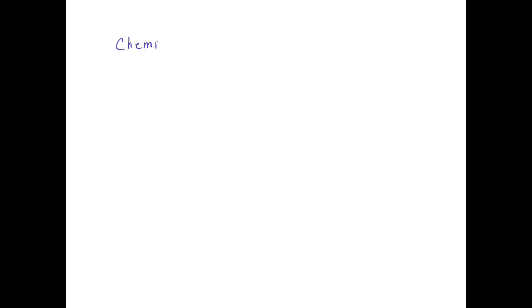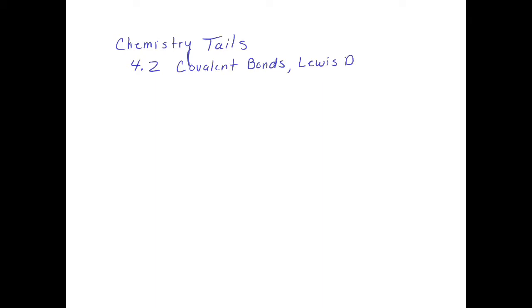Welcome to Chemistry Tales. This is tale 4.2, and we're going to give consideration to how we predict, when two atoms bond together, whether the nature of that bond is covalent or ionic. We're also going to begin to predict structures of molecules using Lewis dot structure procedures.